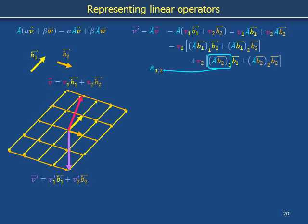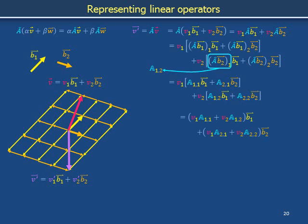Replace the cumbersome notation a-hat b2 sub 1 with blackboard bold A subscript 1 2. The preceding line can then be expressed more compactly. Notice that basis vectors b1 and b2 both appear twice — once each in the first and second sets of square brackets. Rearranging to factor out the basis vectors and re-expressing purple vector v-prime, both sides of the equation are expressed in terms of a yellow b1 part and an orange b2 part. Identifying corresponding weighting coefficients, v-prime 1 equals A11*v1 + A12*v2, and v-prime 2 equals A21*v1 + A22*v2.